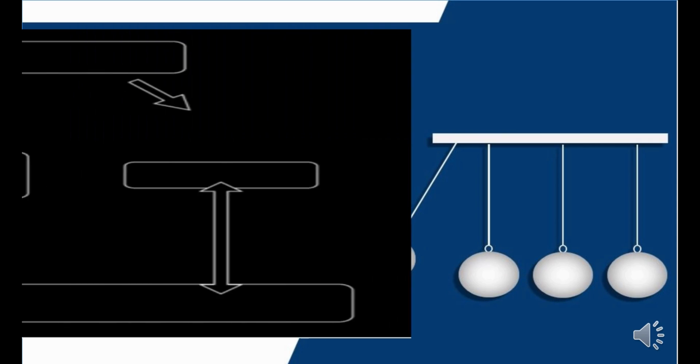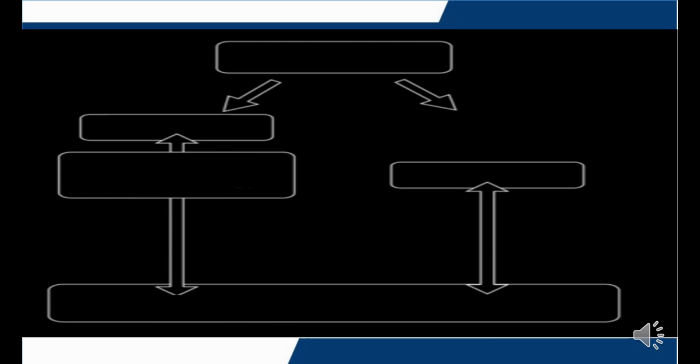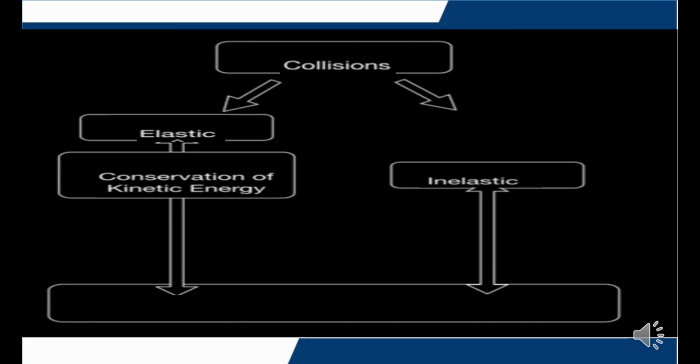When there is a collision, there are two types of collision. An elastic collision can be defined as the state where there is no net loss in kinetic energy in the system as the result of the collision. An inelastic collision can be defined as the type of collision where there is a loss of kinetic energy.